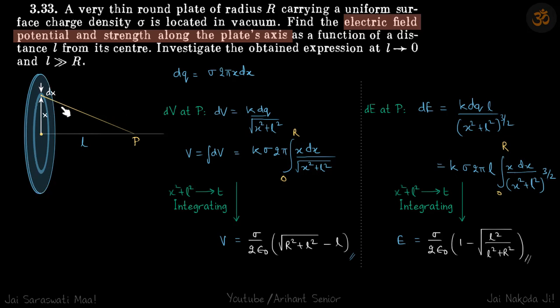We are given a plate and we need to find the field and potential at a point P which is at a distance L from the plate. The radius of the plate is given as R.